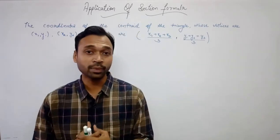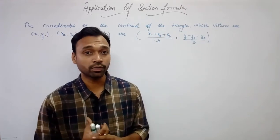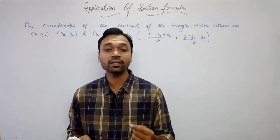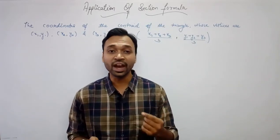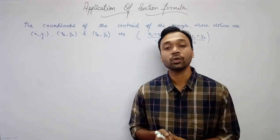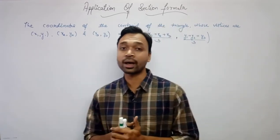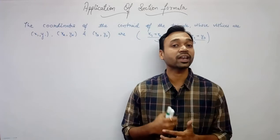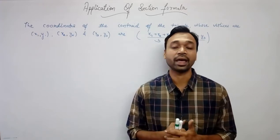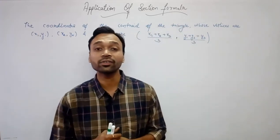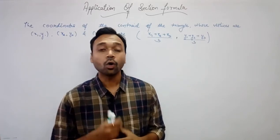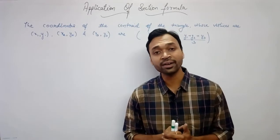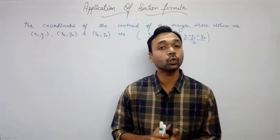Median and centroid — a median is a line segment joining the midpoint of a side of a triangle to the opposite vertex. In a triangle we have three medians, and all three medians intersect at the same point, which is called the centroid.